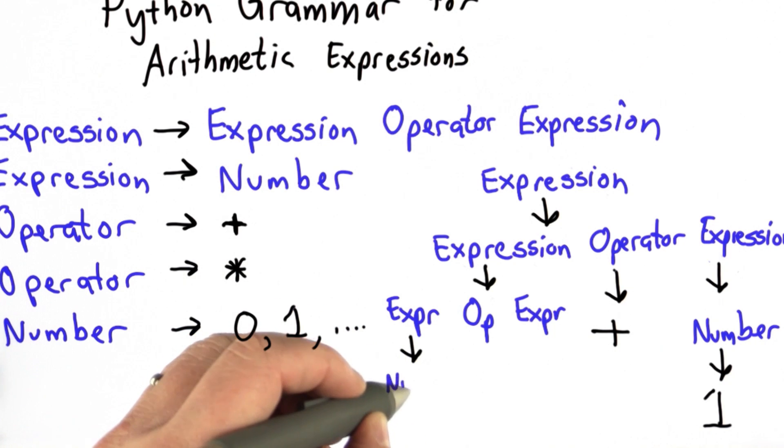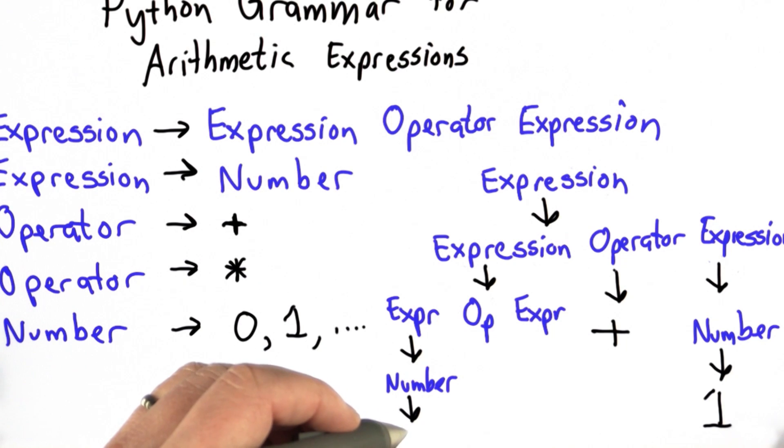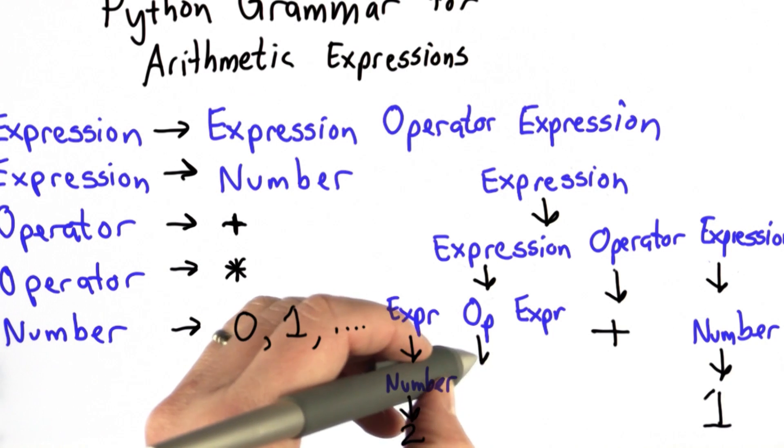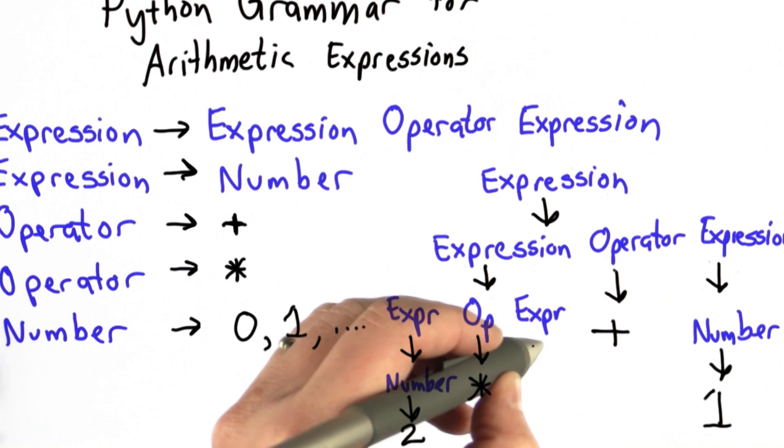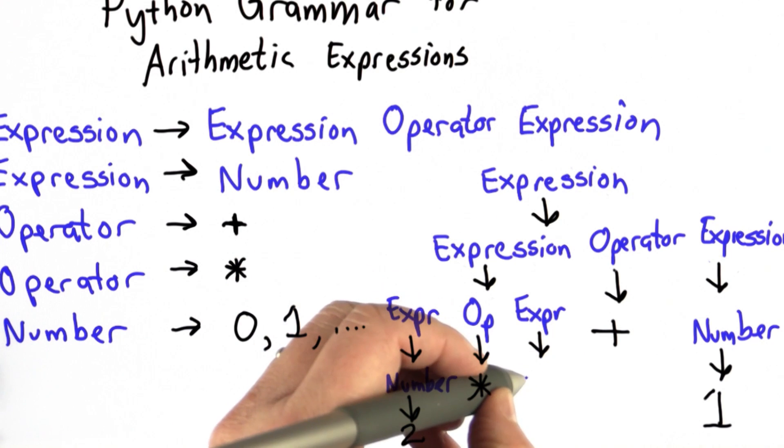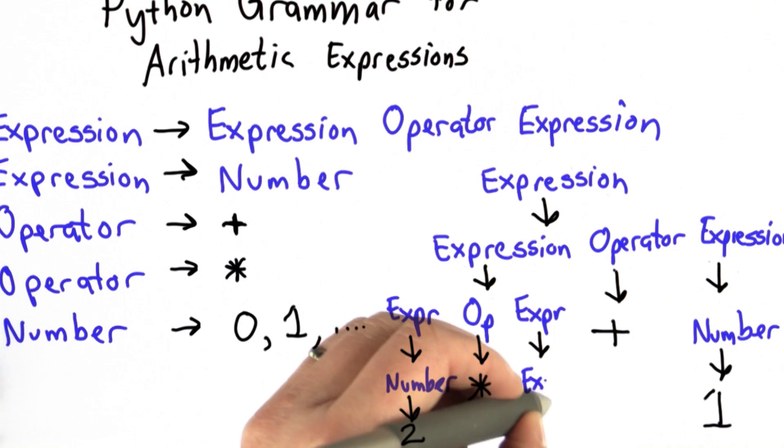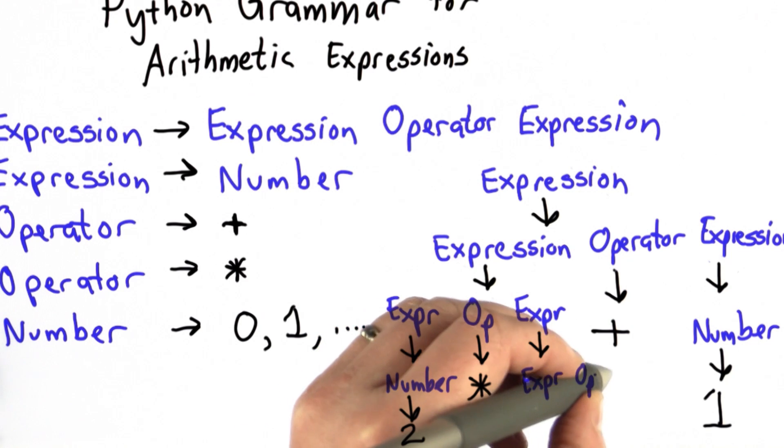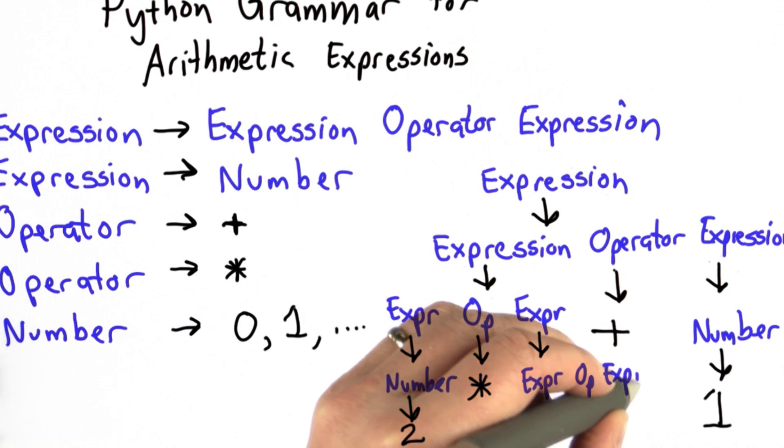We're just using this rule. And now we could do the same thing again, replacing this expression with a number, and replacing that number with, let's say, the number 2. We could replace this operator with the multiplication operator. And we could replace this expression with a number, or we could replace it with an expression operator expression. Let's do that and build increasingly complicated expressions this way.